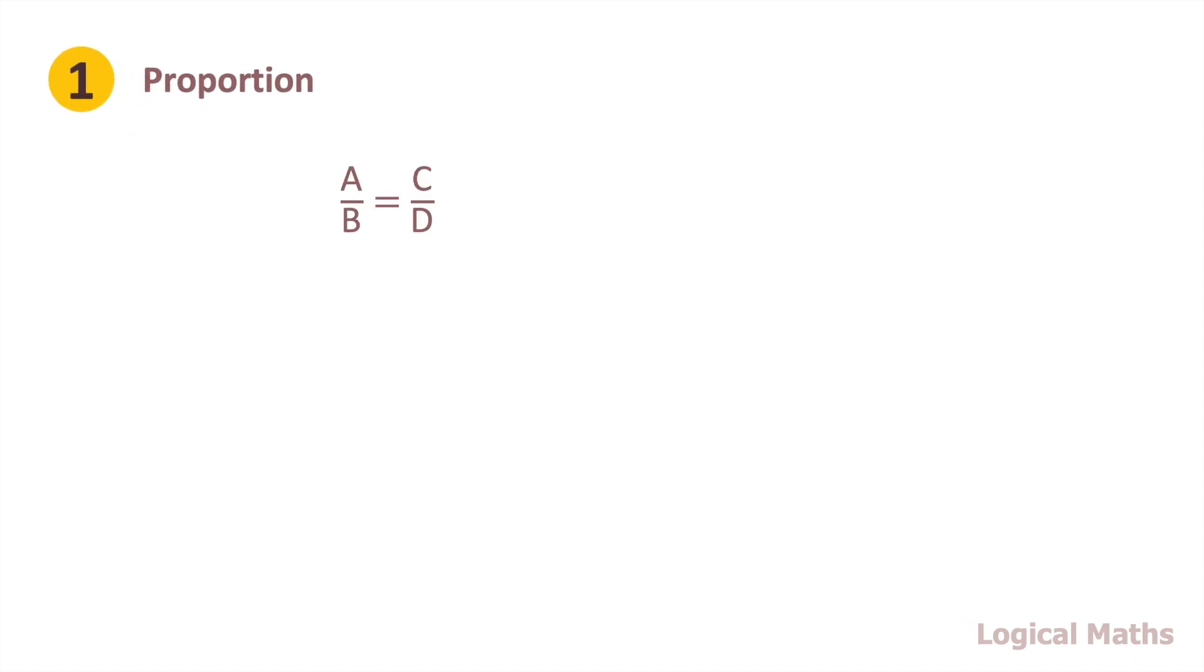A proportion is a name given to a statement that two ratios are equal. From the proportion, we can go to another equation. Let's use some examples. Ratio 4 to 5 equals to ratio 20 to 25. To check whether it's correct, we can write it in another way. Both results are equal to 100, that means that we have a right proportion.